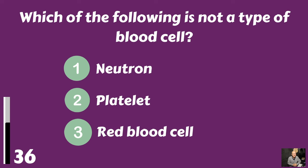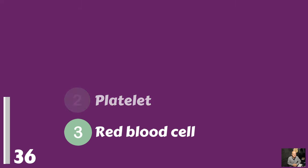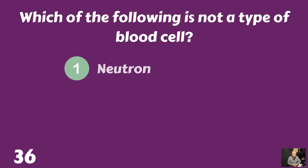Which of the following is not a type of blood cell? A neutron, a platelet, or a red blood cell? Neutrons are not a type of blood cell.